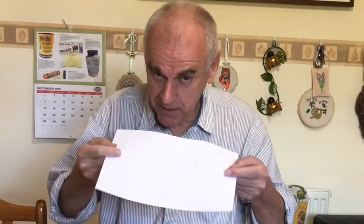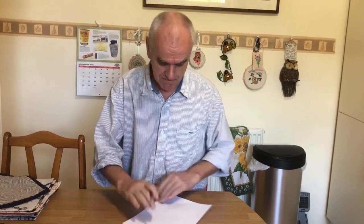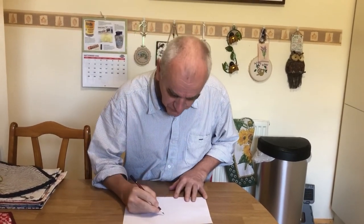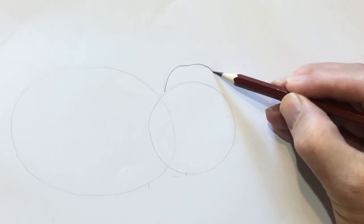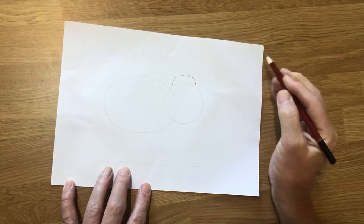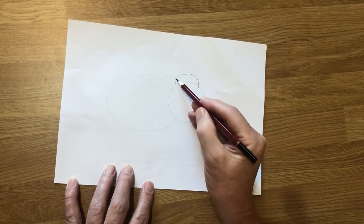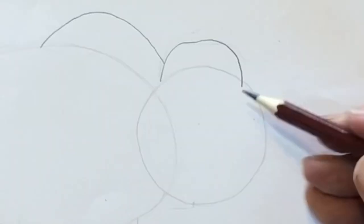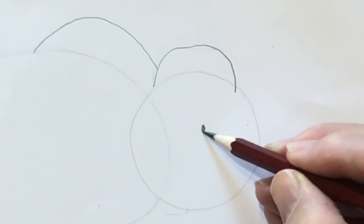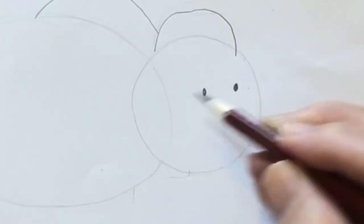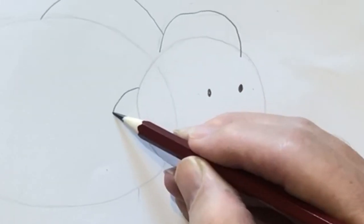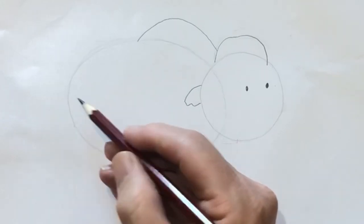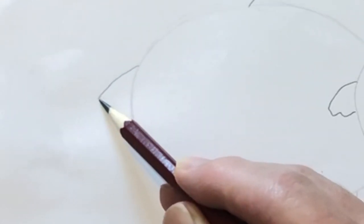Now I'm going to draw a mammoth. I have my paper and I have my pencil. First, there is a bump. Then on his back there is another bump. Now his eyes are small. And he has a small ear. And his tail is short.